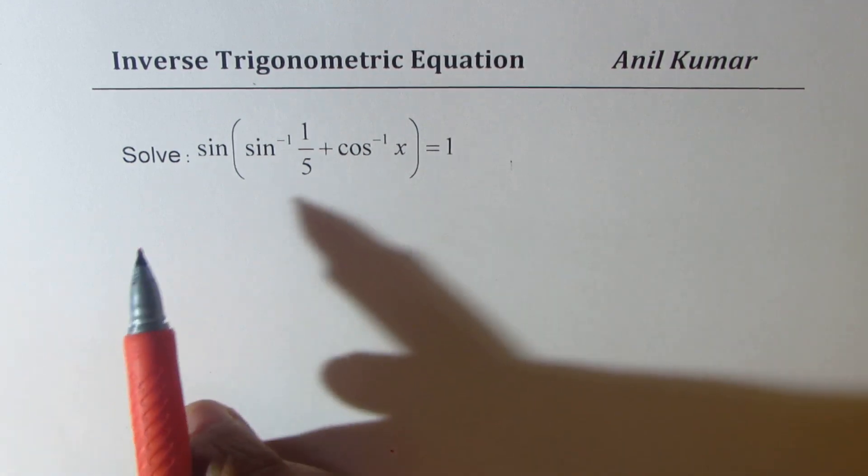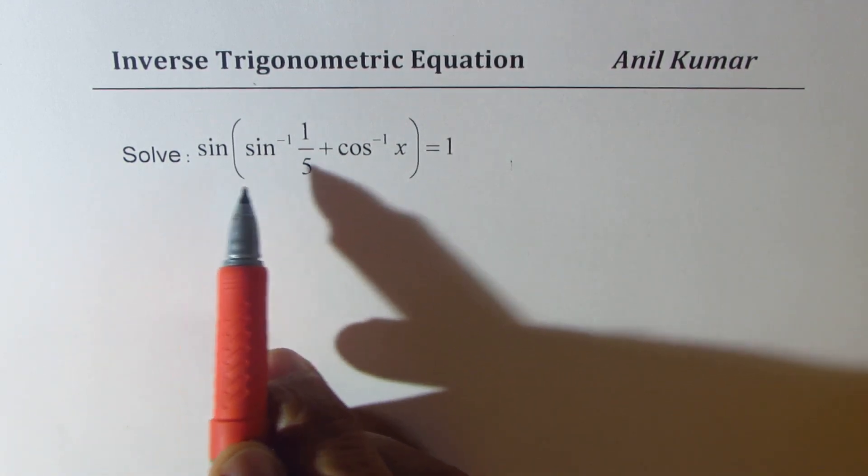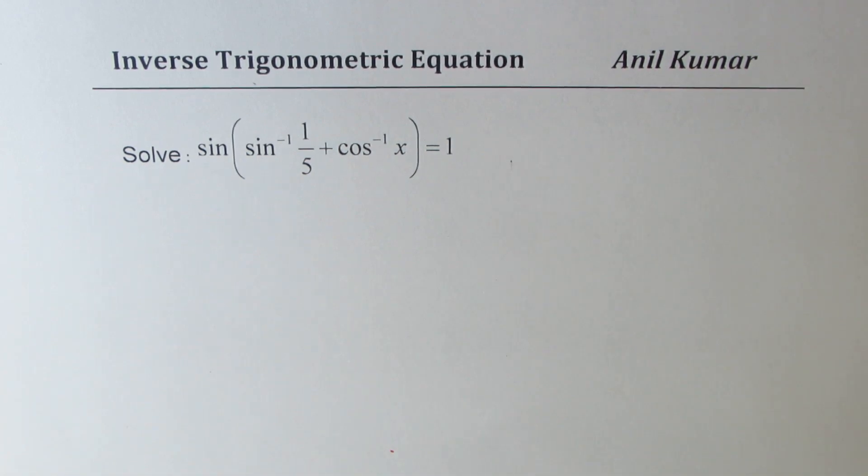The question is: solve sine of sine inverse 1 over 5 plus cos inverse x equal to 1.